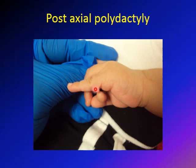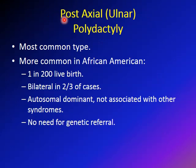Post-axial polydactyly is the most common type, related to the ulna and the small finger. It is also sometimes called ulnar polydactyly. It's the most common type, and in most cases the extra digit is not a well-formed digit — it is connected to the hand with only a skin tag.